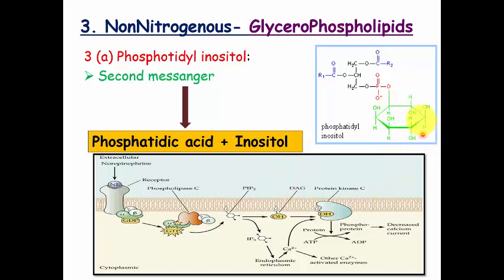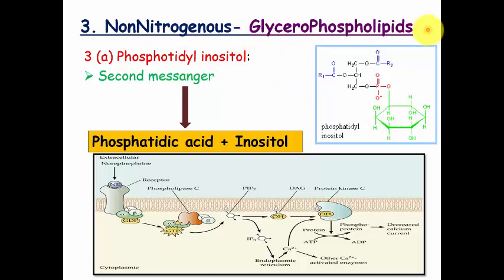After nitrogenous, there are non-nitrogenous glycerophospholipids. Instead of choline, ethanolamine, or serine, there is a molecule called inositol. The phosphatidic acid backbone is bound to inositol. Since inositol is a non-nitrogen molecule, this is known as a non-nitrogenous glycerophospholipid. Phosphatidylinositol acts as a second messenger, which will be discussed in the clinical section.